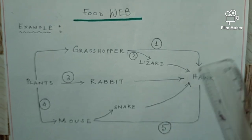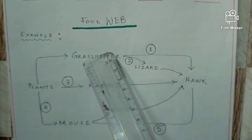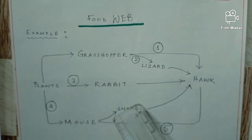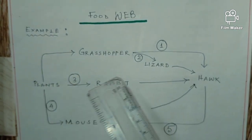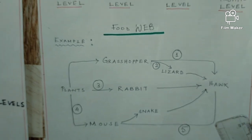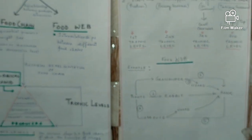You can see the interrelationship — grasshopper, lizard, hawk, mouse, snake, hawk, plants, rabbit, hawk — there is interrelationship among the food chains because each organism is dependent on one another. So this forms the food wave. Trophic level means the biotic levels existing in a food chain.